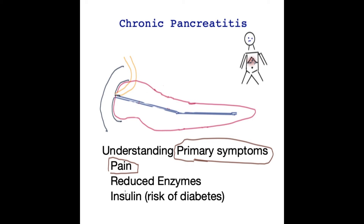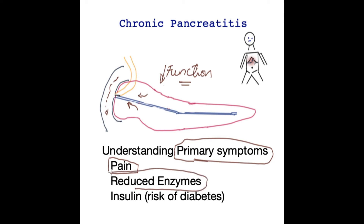Fibrosis develops alongside inflammation, decreasing the function of the pancreas. As a result, not enough enzymes are available to digest the food coming down the small bowel. The effect of these reduced enzymes means patients typically find they have loose stool which is pale and offensive.